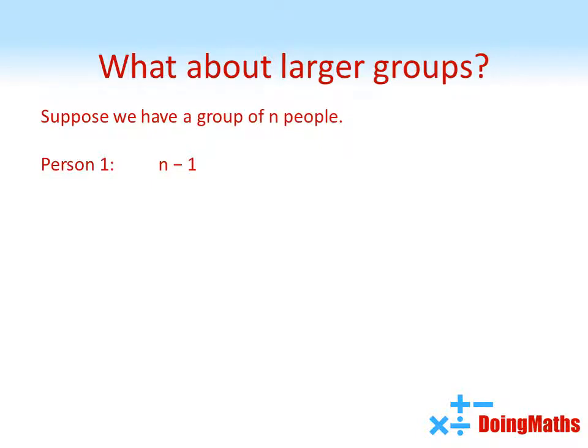When we count for person two, they've already shaken hands with person one and we're not counting themselves, so we've got n minus 2 people to shake hands with. Person three, we don't need to count their shake with one and person two because we've already counted them. We don't need to count them shaking hands with themselves, so they've got n minus 3 handshakes, and so on until we get to person n minus 2 who's got two handshakes left.